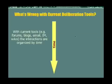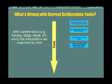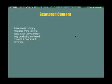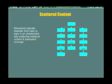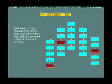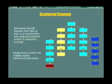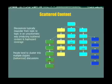So what is wrong with current deliberation tools? These include systems such as forums, blogs, email, instant messaging, wikis, and so on. In all of these systems, interactions are organized by time — people make posts and other posts are made in response right after another. This results in several important problems. One is the issue of scattered content: discussions in a time-centric system typically meander from topic to topic in an unsystematic way, producing scattered content and haphazard coverage. Points made on a given topic may appear widely scattered throughout the discussion stream. Another issue is that people tend to cluster into what we can call balkanized groups, where they talk only to like-minded people and not to the larger community.